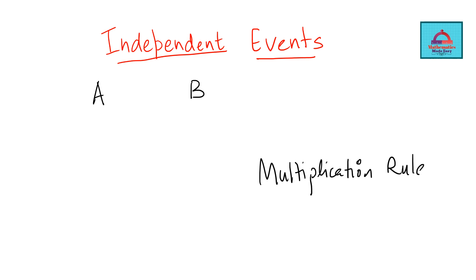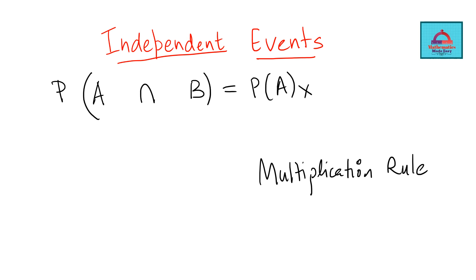What is this multiplication rule? The multiplication rule states that if you have to find the probability of two independent events, you can calculate the probability of one event and multiply it with the probability of the other event. So the probability of A and B is going to be probability of A multiplied with probability of B. If two independent events are given, you can find their combined probability by multiplying their individual probabilities. That is called the multiplication rule.